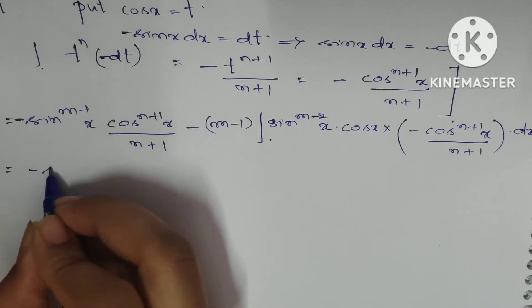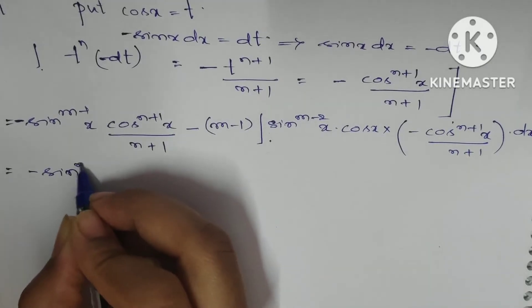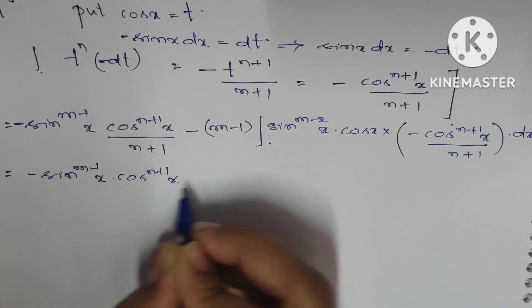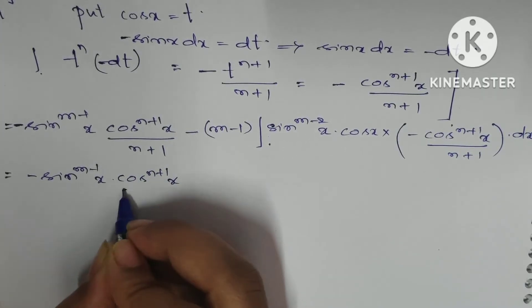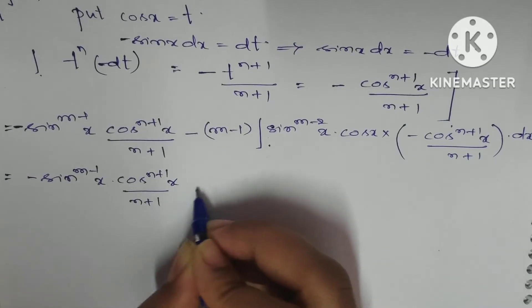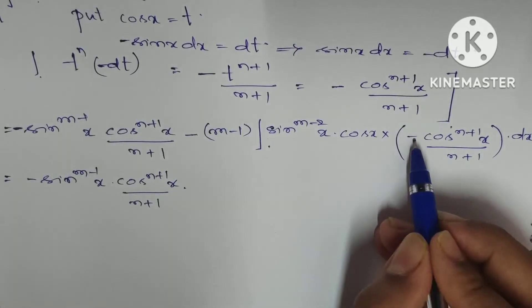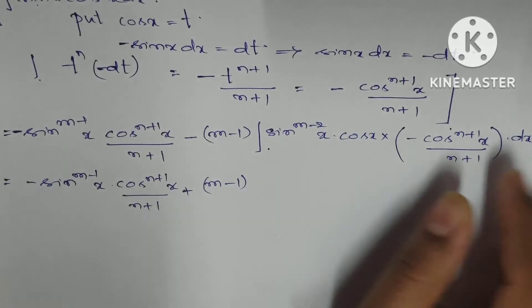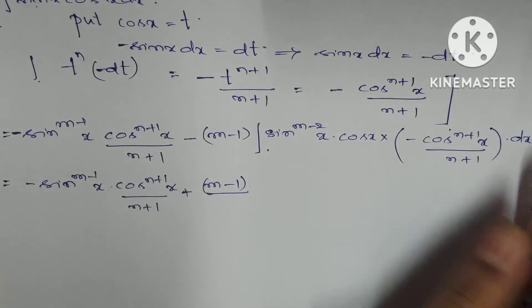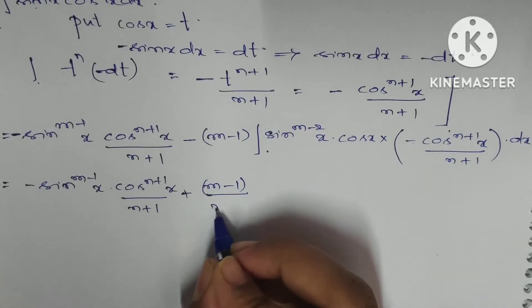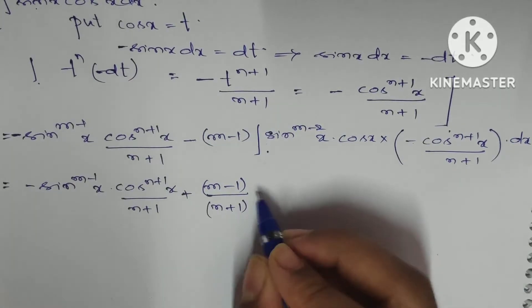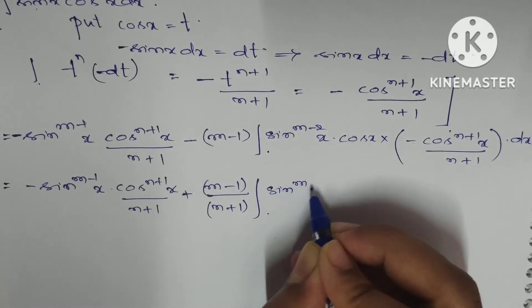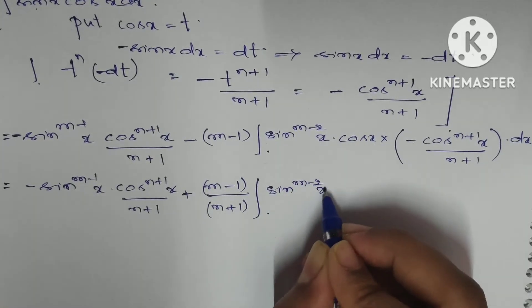This equals -sin^(m-1)(x) · cos^(n+1)(x)/(n+1). The minus times minus becomes plus, giving +(m-1)/(n+1) · ∫sin^(m-2)(x) · cos^(n+1)(x) dx. I'll take (n+1) outside.